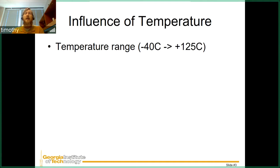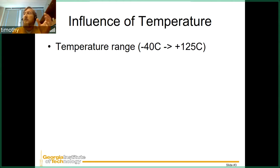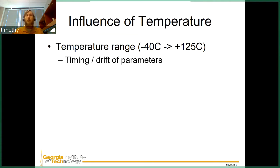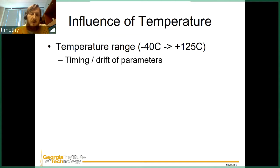First we'll look at the influence of temperature. Temperature range can be something like negative 40 degrees C all the way up to 125°C — this is an example operating range. Temperature can affect the characteristics of electronics. As temperature changes, electronic characteristics will differ from what they are spec'd at, and most data sheets will have a table showing operation over different temperature ranges.